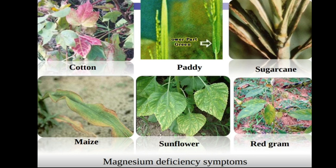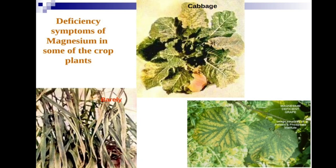Visual examples of magnesium deficiency: in cotton, dead necrotic spots develop; in paddy, the lower part stays green while the upper part turns yellowish. In sugarcane and maize, necrotic spots are seen; in sunflower, chlorotic spots appear. In red gram, barley, cabbage, and grapes, magnesium deficiency symptoms are also observable.